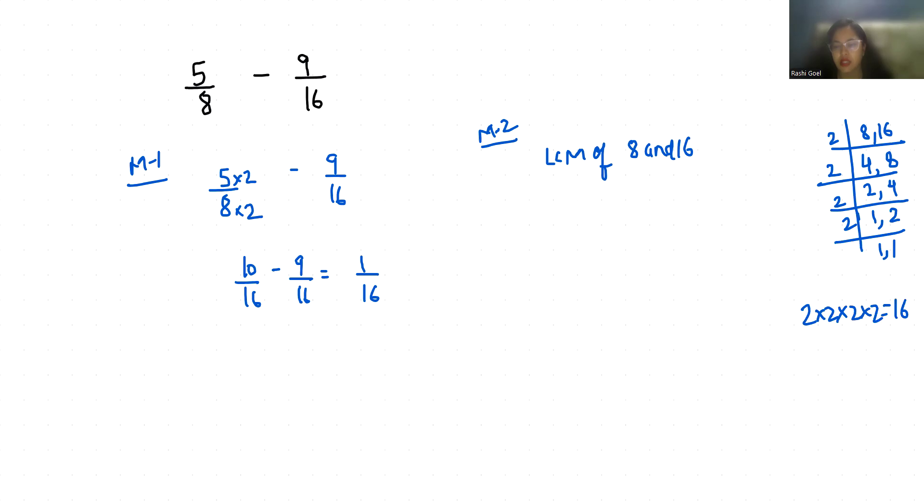Now write the LCM in denominator and write the numerator of first number with multiply sign. Check in table of 8, the denominator LCM comes at which place. So in table of 8, 16 comes at 2 place.